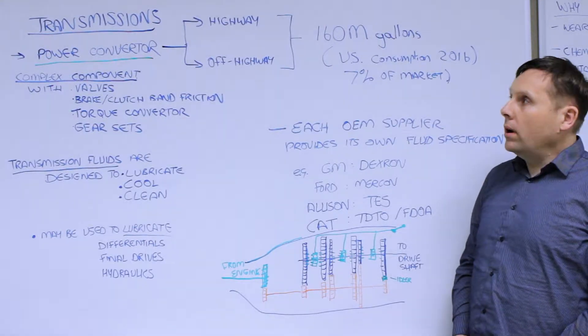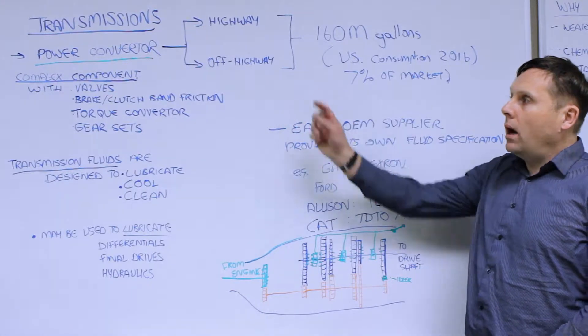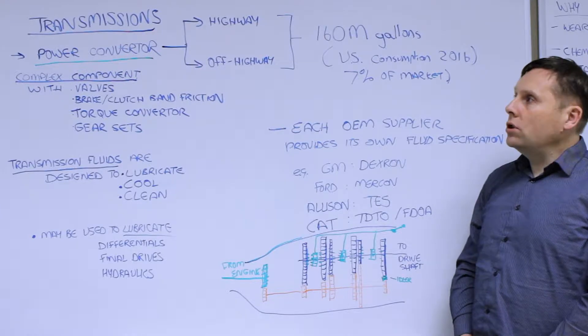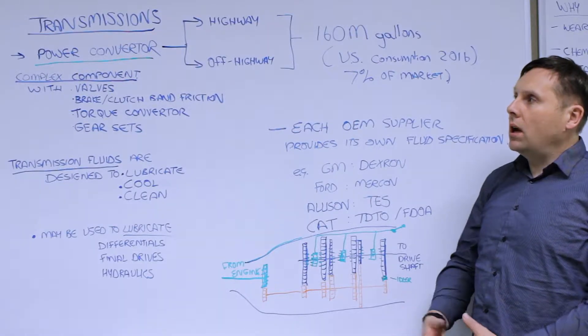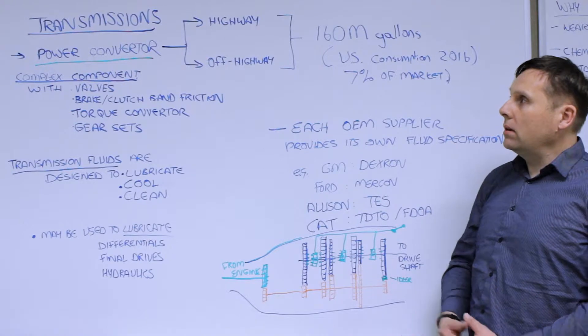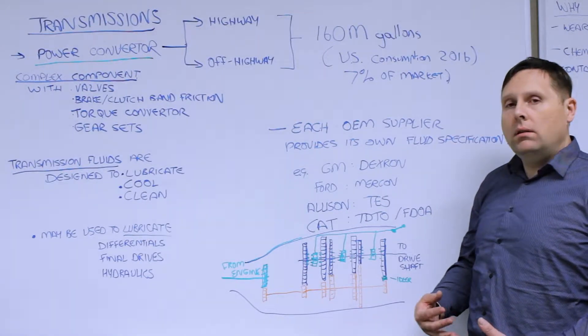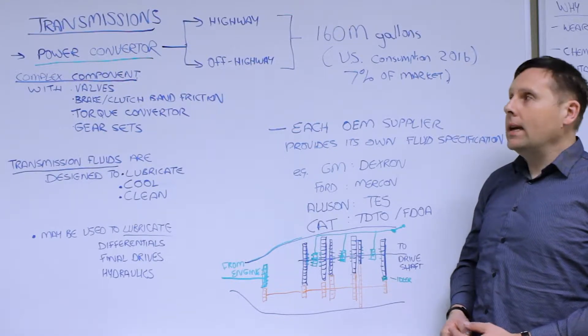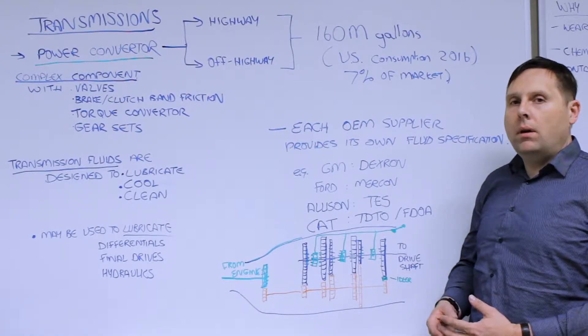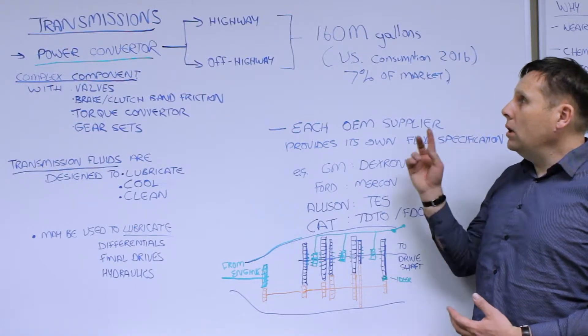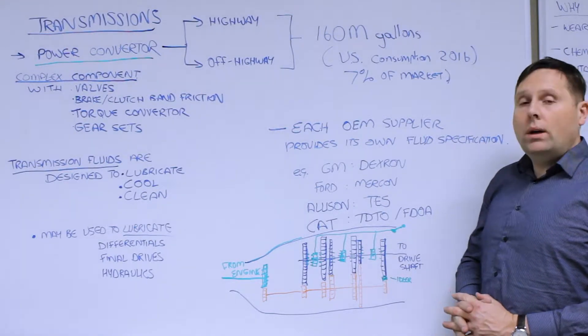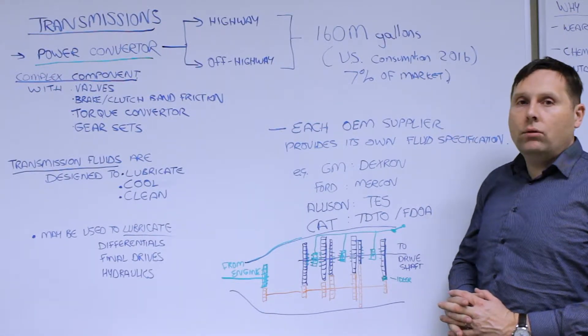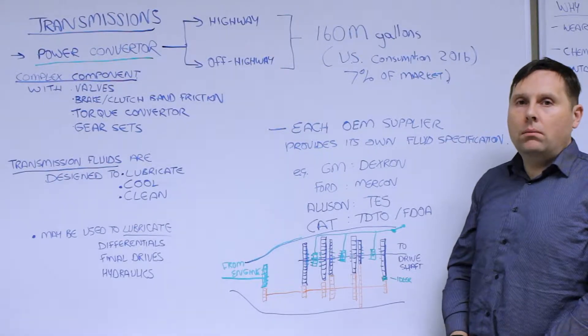They are broadly broken out into both highway and off-highway type applications. It is one of the largest uses of gear sets in the world because they're in mobile systems. As a result, transmission fluid is one of the largest volumes of fluid in the market. For example, in the U.S., consumption in 2016 was almost 160 million gallons of fluid, most of that factory fill, or almost 7% of the entire lubricant market.